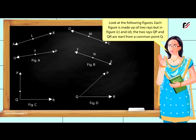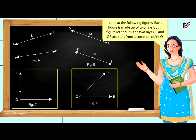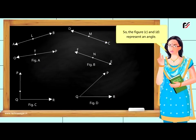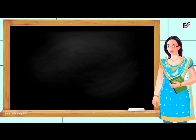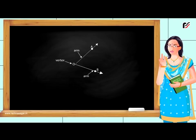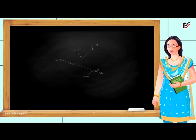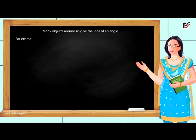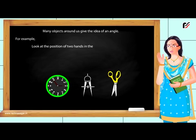Angles: Look at the following figures. Each figure is made up of two rays, but in figures C and D, the two rays QB and QR are started from a common point Q. So, the figures C and D represent an angle. Similarly, draw a ray OA with O as its end point and another ray OB with O as its end point. The common end point O of the two rays, arms OA and OB, is called the vertex of the angle. The two rays or line segments are called the arms of the angle. Many objects around us give the idea of an angle. For example, look at the position of two hands in a clock or two arms of a pair of scissors or two arms of a divider.